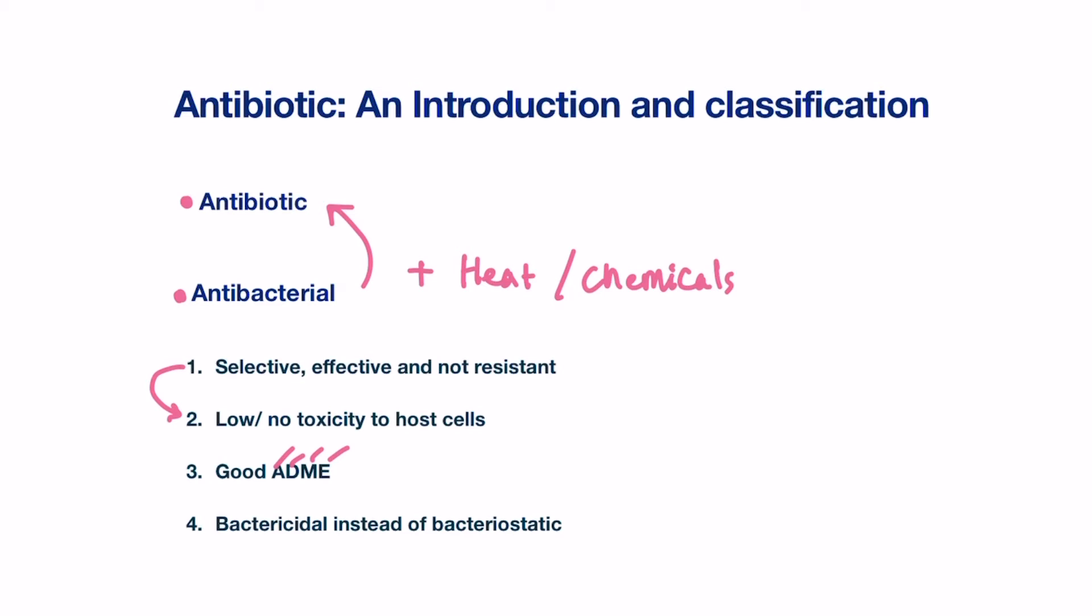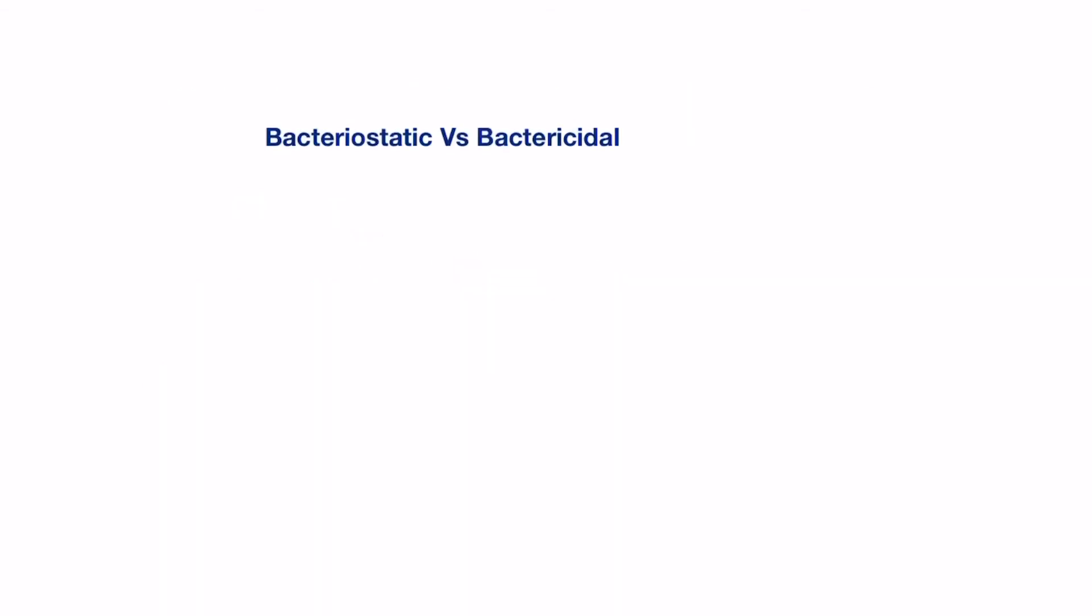Finally, it must be bactericidal instead of bacteriostatic. What's the difference between bacteriostatic and bactericidal? Bacteriostatic are antibacterial agents which inhibit cell growth only. They don't kill the bacteria outright. They prevent the cell from growing and multiplying, which gives the body's own defense system enough time to gather their resources, for example, immune cells and antibodies, to destroy the bacteria and wipe it out from the body.